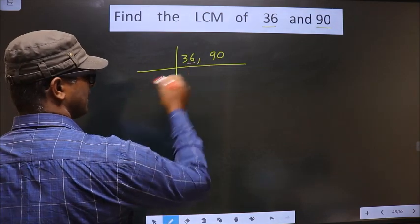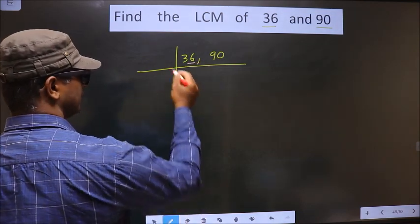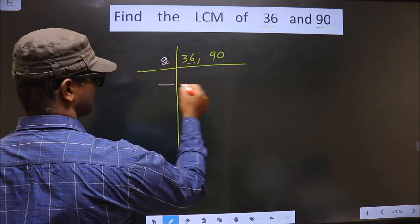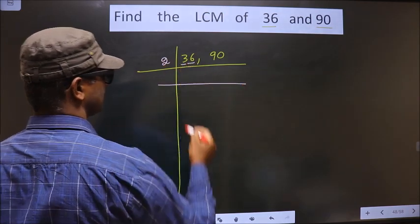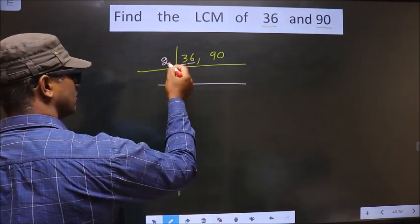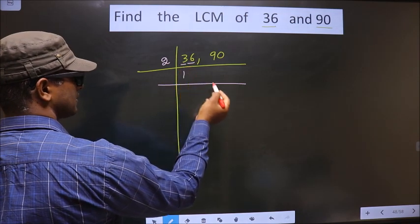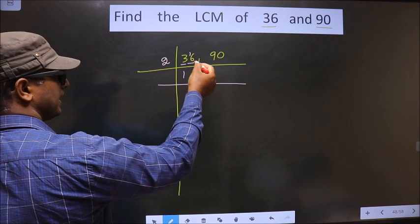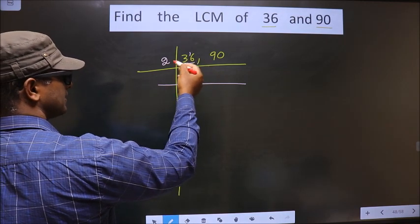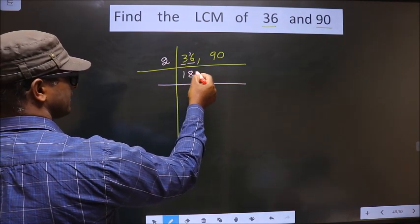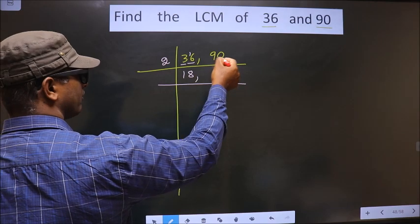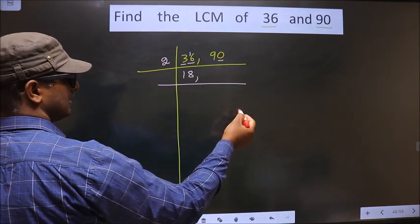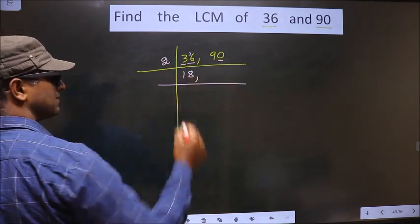In this number, the last digit is 6 which is even. So we take 2 here. Now first number is 3. A number close to 3 in 2 table is 2 ones, 2. 3 minus 2 is 1. 1 carried forward making it 16. When do we get 16 in 2 table? 2 eights, 16. Now for this number, last digit is 0. So this number is divisible by 2.